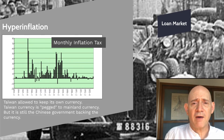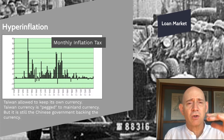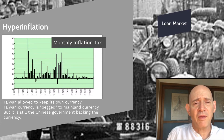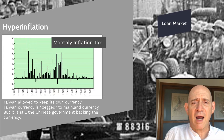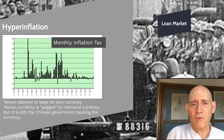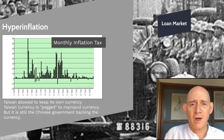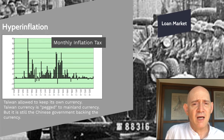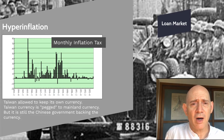If every year you have an inflation tax of 20% — meaning your currency is losing 20% of its value every month — at the end of the year your currency is only going to be worth 7% of what it had been worth before. In Taiwan, there are some ups and downs, but throughout the period all the way up until about 1950, there is very significant inflation going on.